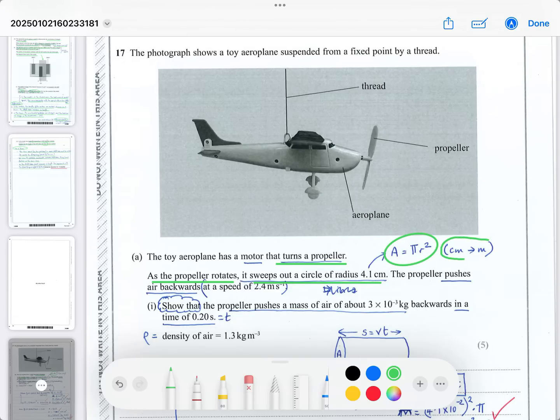Remember to change centimeters into meters. The propeller pushes air backwards at 2.4 meters per second. By Newton's third law, the momentum of air going backwards pushes the plane forwards. What you learned in year 12 comes in handy in year 13 Unit 4.